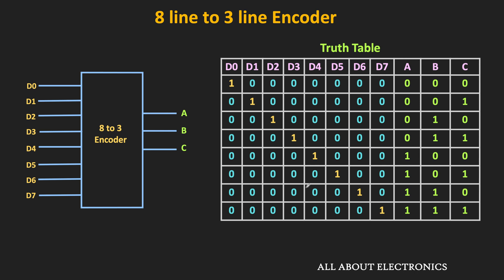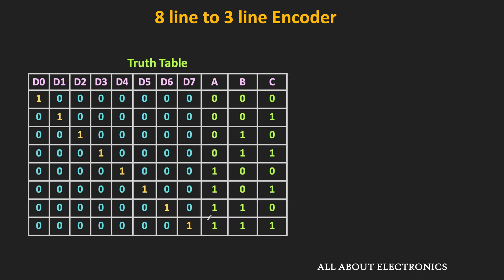Based on this truth table, we can design the logic circuit of the 8-line to 3-line encoder. Output A is high when D4, D5, D6, or D7 is high, so the logical expression for A is D4 + D5 + D6 + D7. Output B is high when D2, D3, D6, or D7 is high, giving the expression B = D2 + D3 + D6 + D7.